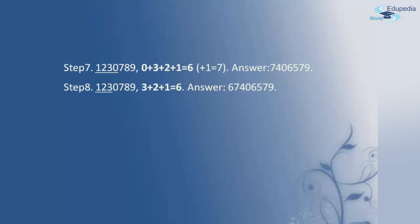Moving further, I now add only 2 digits: 2 plus 1 equals 3. This 3 is written in the answer. In the answer, I now have the digits 3, 6, 7, 4, 0, 6, 5, 7 and 9.